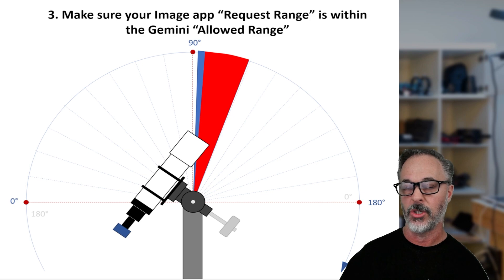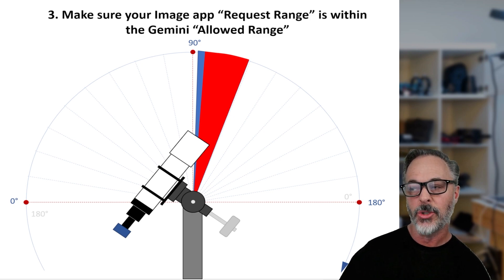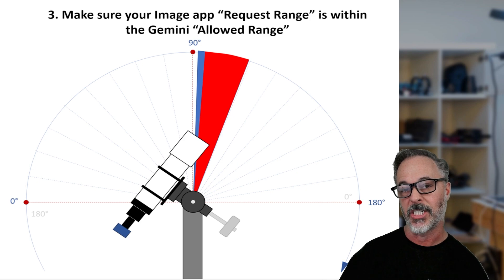So that we want to make sure the imaging app request range has some padding around that, but is definitely within the Gemini allowed range.